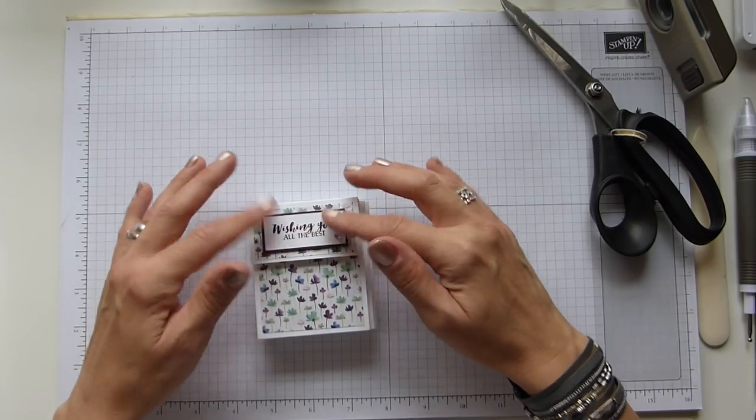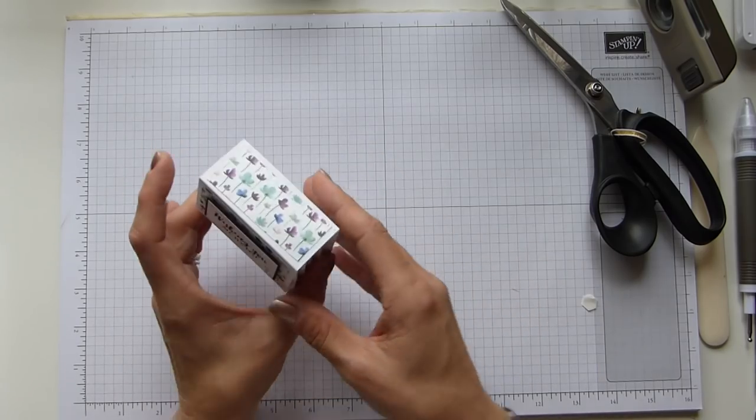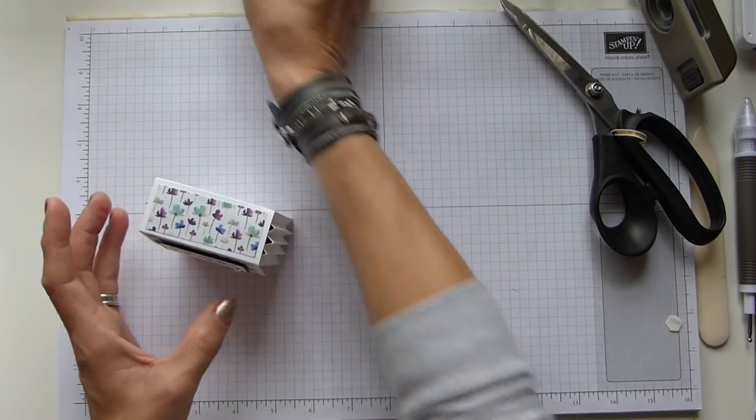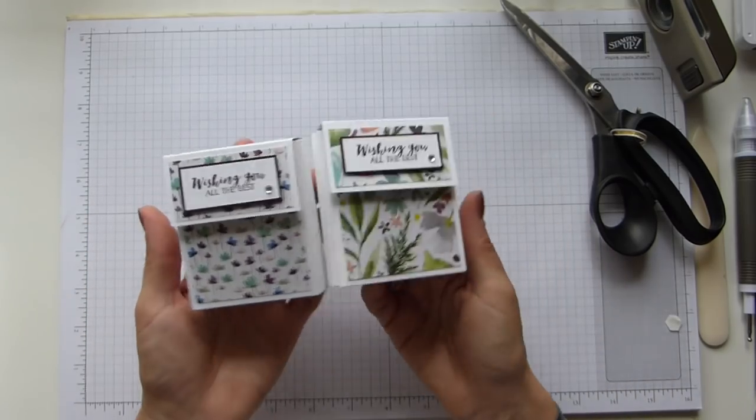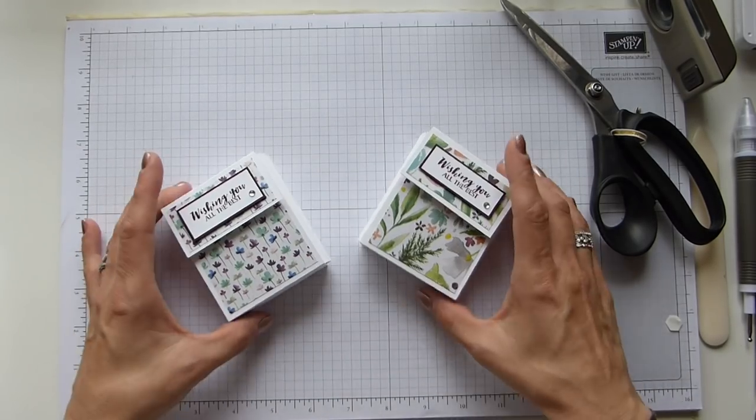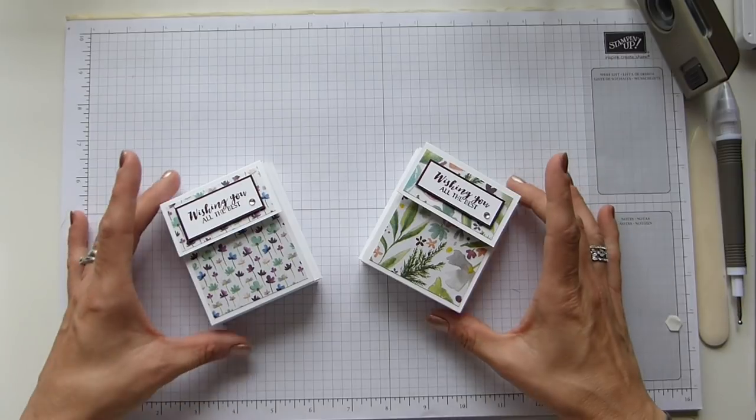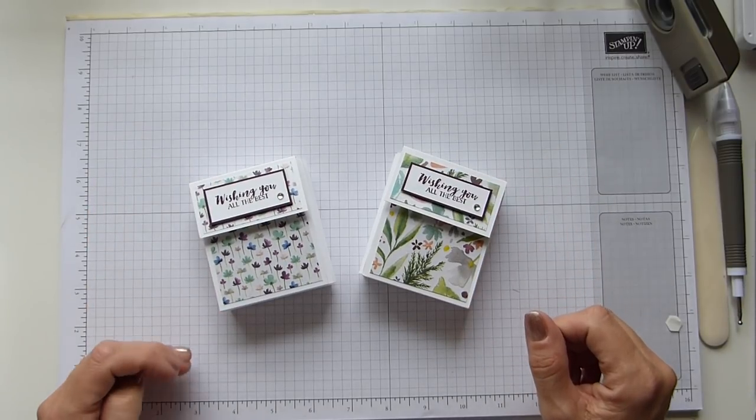You just need to pop this on the front. There's a cute little sentiment. I don't know why that one's bulging; it shouldn't be. Give them a little squish.